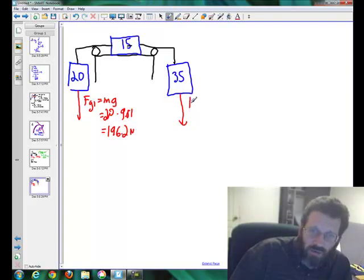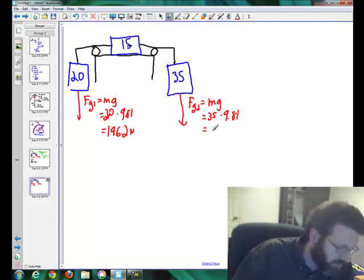Then over here, well, how's gravity acting on this one? I hope it's a bigger force of gravity too. Maybe mass times the acceleration due to gravity. So we've got 35 multiplied by 9.81, and that is hopefully a bigger number.